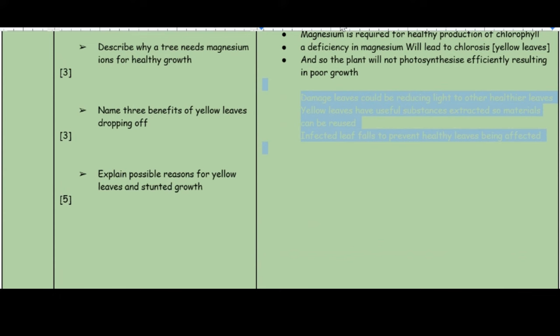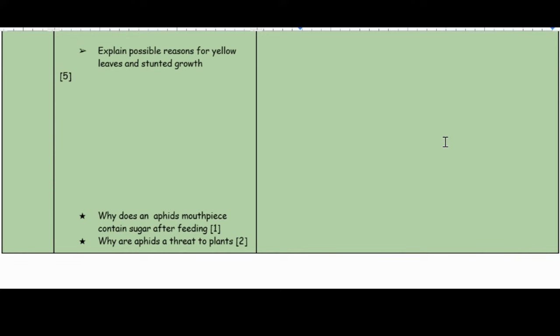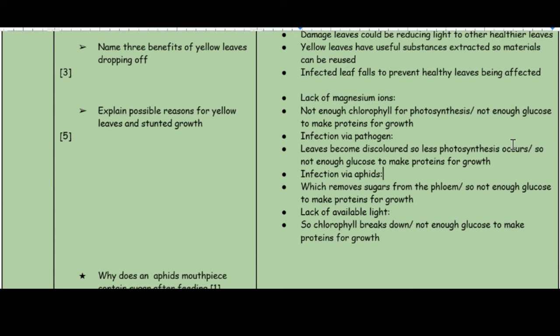Name three benefits of yellow leaves dropping off. When they fall off, the other healthy leaves are protected. Damaged leaves could be reducing light to other healthy ones. Yellow leaves have some useful substances that can be extracted so the materials can be reused. Explain possible reasons for yellow leaves and stunted growth: lack of magnesium ions causing lack of chlorophyll; infection via a pathogen making leaves discolored; infection via aphids removing sugar from the phloem; and lack of available light causing chlorophyll to break down with insufficient glucose for growth.